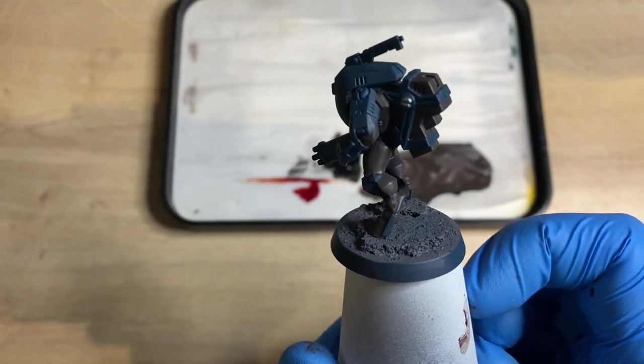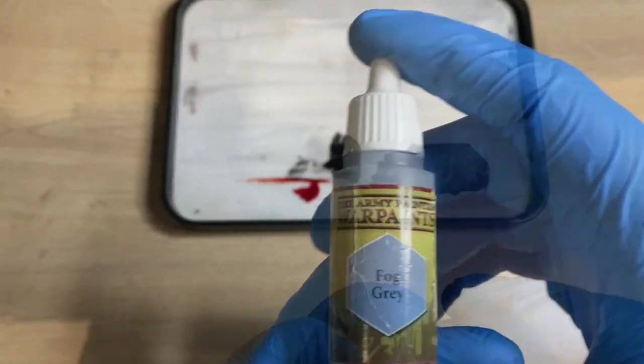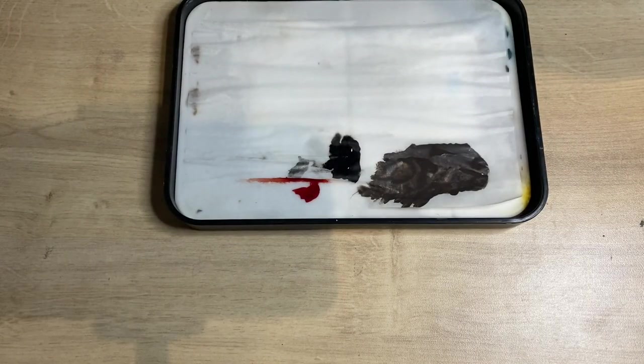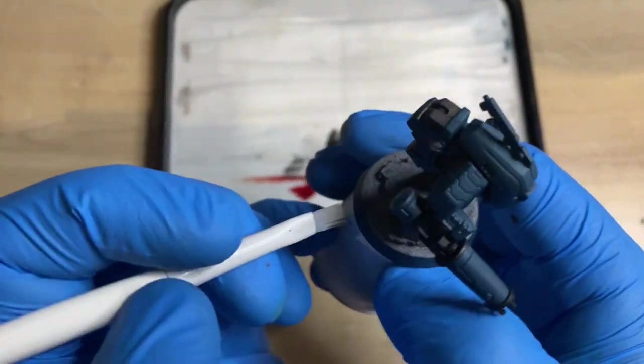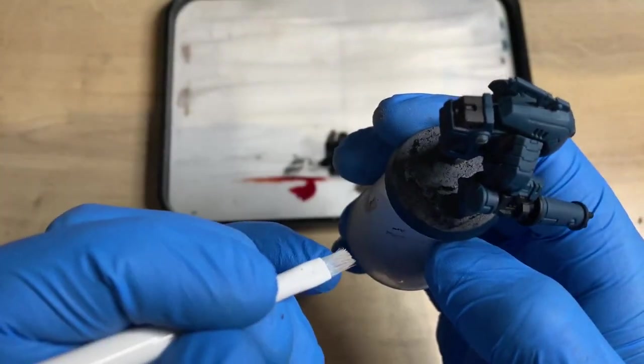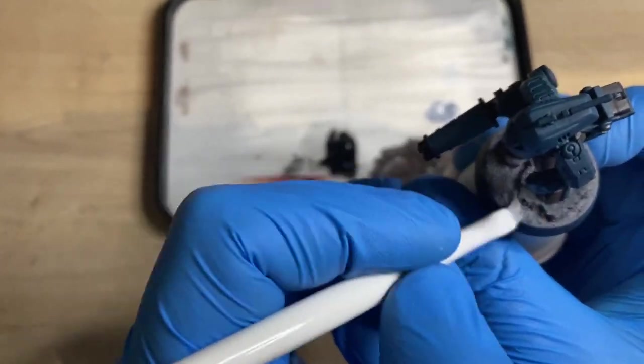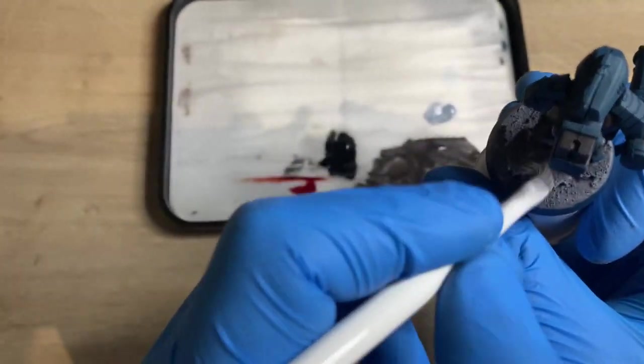And now that our Astrogranite's nice and dry, we're going to move on to our next paint, which will be Fog Grey, but to be honest with you, any light grey will work for this. Work it into a dry brush, get most of the paint off the bristles—you know the routine—and we're just going to dry brush the entire base.